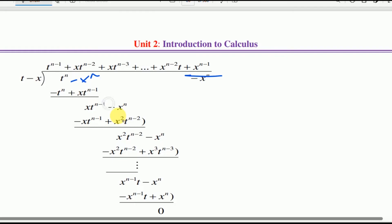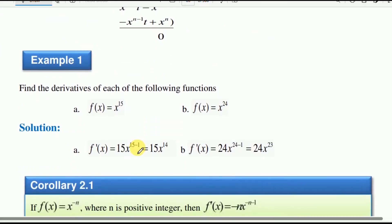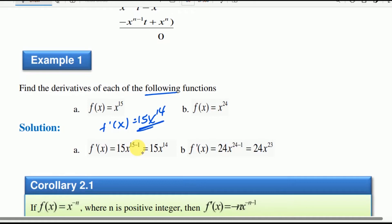For example, find the derivative of each of the following functions. The derivative f prime at x equals n times x to the power of n minus 1. So if f of x equals x to the power of 24, this gives 24 times x to the power of 23.